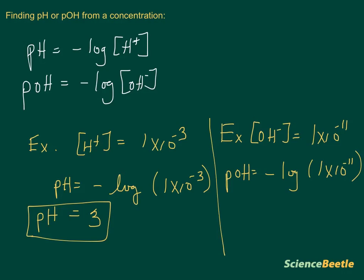If you plug that in directly into the calculator, negative, then log, and then enter the number, what you're going to wind up finding is that the pOH is going to be equal to 11.